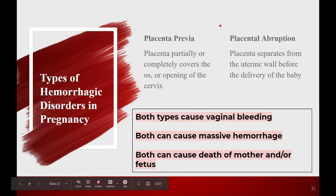Placenta previa is where the placenta partially or completely covers the opening of the cervix, known as the os. That is dangerous because as the cervix starts to open even just a tiny bit, think about how much blood flow goes through a placenta. You're perfusing an entire human being, and now there's free flow going out through the vagina and onto the floor.